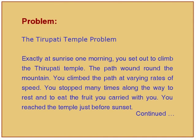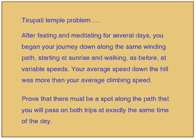The Tirupati Temple problem: exactly at sunrise, you set out to climb the Tirupati Temple. The path winds round the mountain; you climb at varying speeds, stopping to rest and eat. You reach the temple just before sunset. After fasting and meditating for several days, you begin your journey down the same path, starting at sunrise at variable speeds. Your average speed down is more than your average climbing speed. Prove there must be a spot along the path that you will pass on both trips at exactly the same time of day.